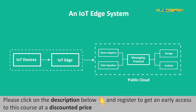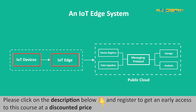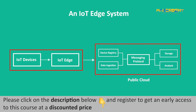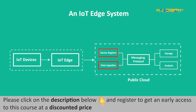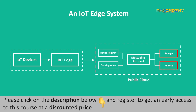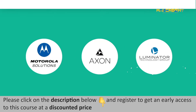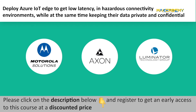In an IoT Edge system, on one side are devices that generate data that will go to the cloud. Devices are connected to the edge first, which acts as a gateway and connects devices to the public cloud. On the cloud end, we have two points of connection: first is the device registry, where we register an IoT device to Azure IoT Hub; and second is the data ingestion endpoint, where the device data gets streamed to various other cloud services for analysis or storage. Leading companies like Motorola Solutions, Axon, and Luminator Technology Group deploy Azure IoT Edge to get low latency in hazardous connectivity environments while keeping data private and confidential. Edge brings intelligence to the device, and hence many IoT product manufacturers prefer edge computing.